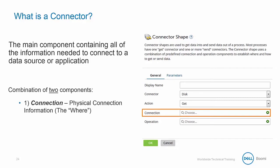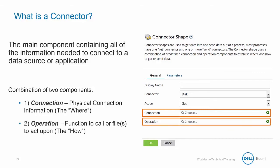The second component is the operation, which is the function to call, or the files to act upon — you can think of it as the 'how.'